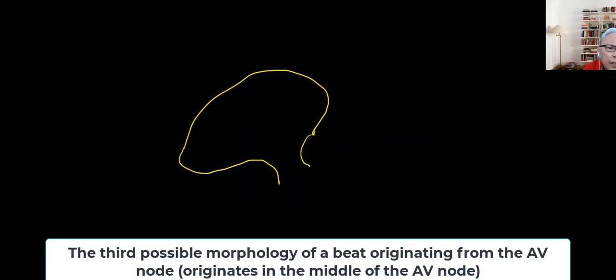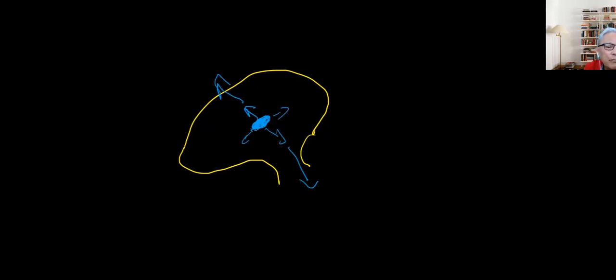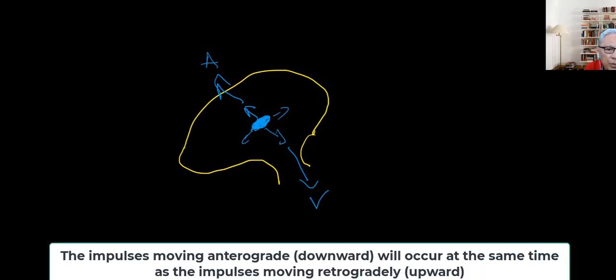And now the impulse is coming right in the middle of the AV node. So the spark is going to go like this. And so the movement of this current is going to occur at the same time going up as well into the atria, as well as in the ventricles.